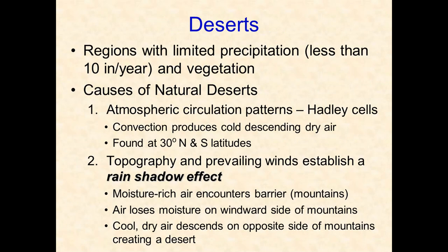A desert is a biome classified based on the amount of precipitation, not temperature. If an area receives less than 10 inches of precipitation per year, it is classified as a desert. There are two major natural causes of deserts: atmospheric circulation patterns and the rain shadow effect.